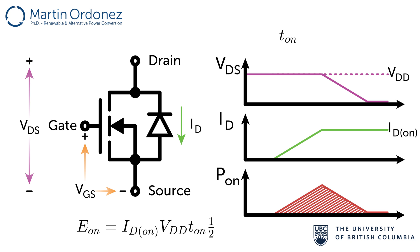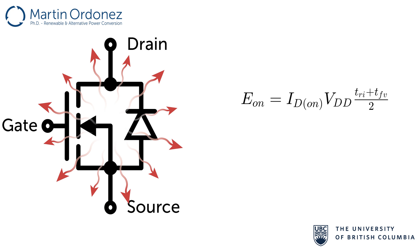The total time is the time it takes for the current to rise plus the time it takes for the voltage to fall. From the turn-on energy, it is possible to determine power losses by multiplying the energy by the switching frequency, as this determines how many times per second there will be turn-on energy dissipation.